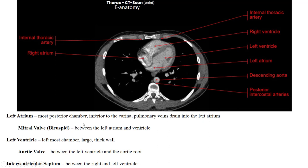The left atrium is the most posterior chamber, inferior to the carina, and the pulmonary veins drain into it. Between the left atrium and left ventricle is the bicuspid or mitral valve. The left ventricle is the leftmost chamber and has the large thick wall. The aortic valve is the most central of the valves in the heart — it sits right in the middle. There is also the interventricular septum between the right and left ventricles, a very thick wall between the two.